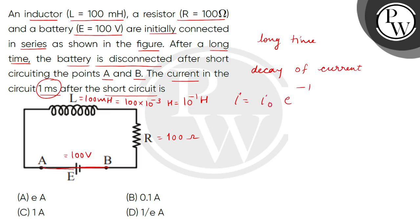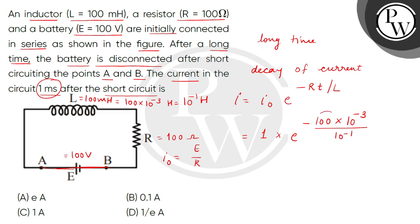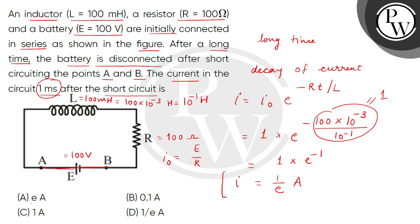The decay of current formula is: I equals I₀ times e to the power of minus R·t divided by L. Here, I₀ equals E divided by R, which is 100 divided by 100 equals 1 ampere. The time given is 1 millisecond and L equals 10 to the power minus 1 henry. Substituting these values, the correct answer is option number D.